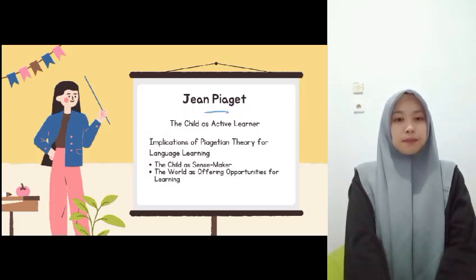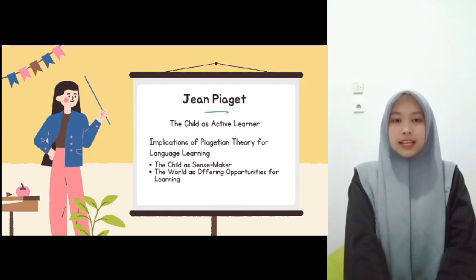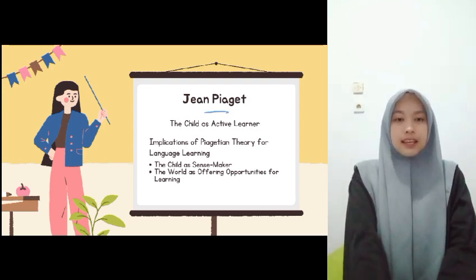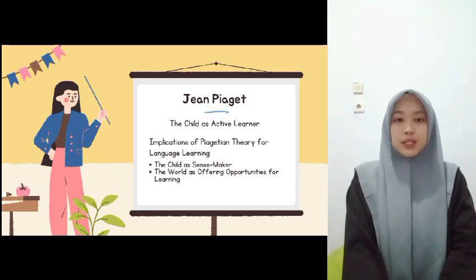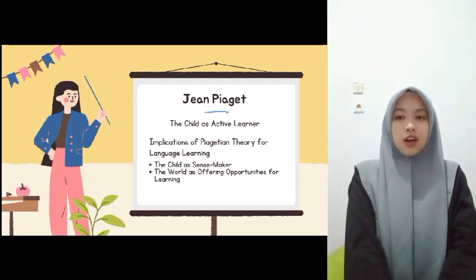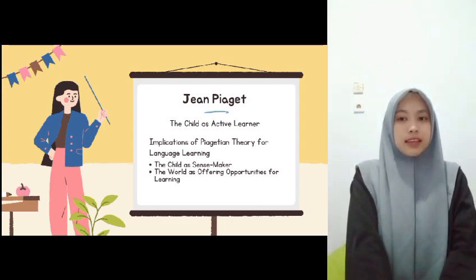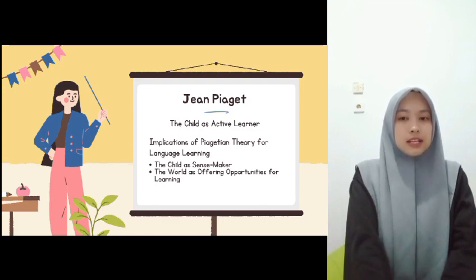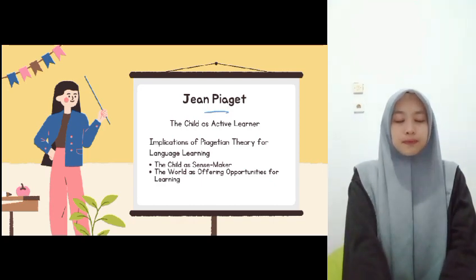Now I would like to share the theories of Jean Piaget, Lev Vygotsky, and Jerome Bruner. The first theory is from Jean Piaget — according to Piaget, the child is an active learner, continually interacting with the world around them and solving problems presented by the environment. The implications of Piagetian theory for language learning are: first, the child is a sense-maker — children seek out intention and purpose in what they see other people doing, bringing their knowledge and experience to make sense of others' actions and language. Second, the world offers opportunities for learning — transferring this idea to the classroom, we can think of classroom activities as creating and offering opportunities to learners for learning.